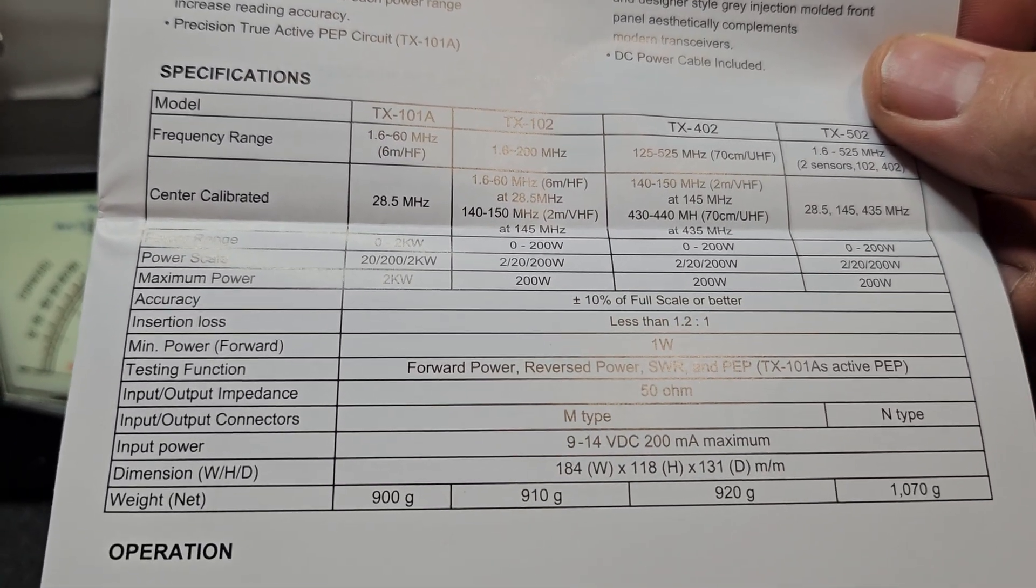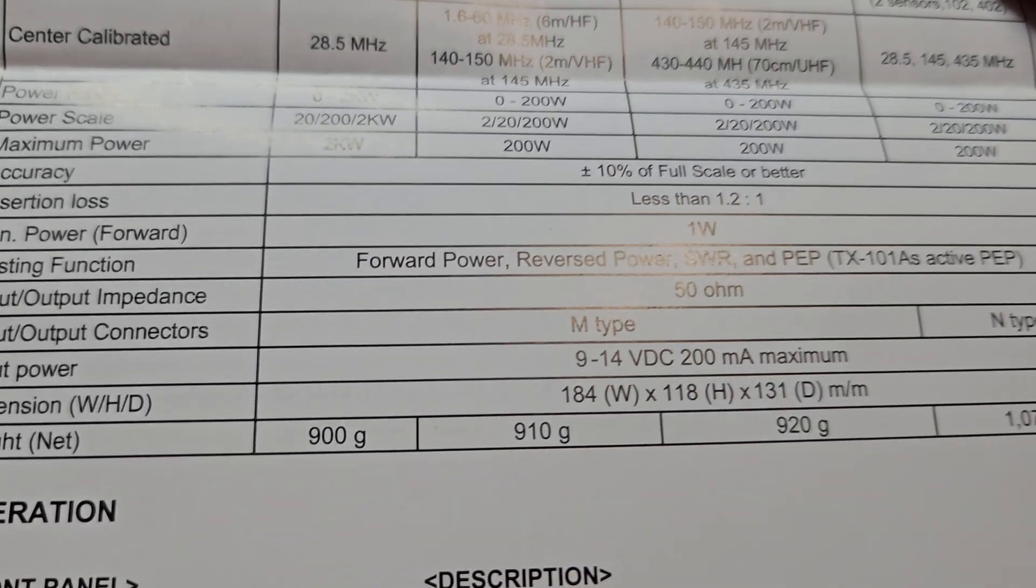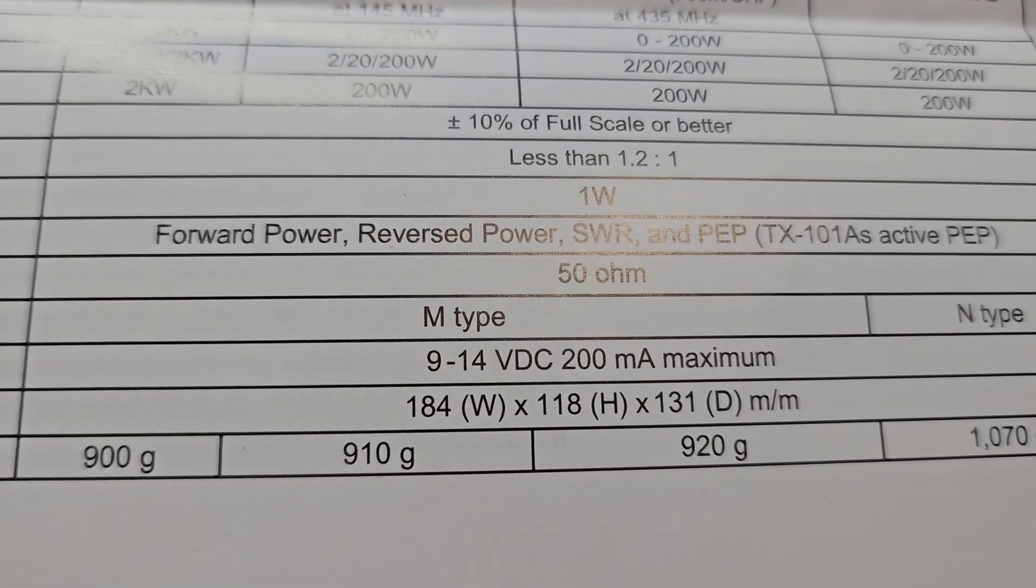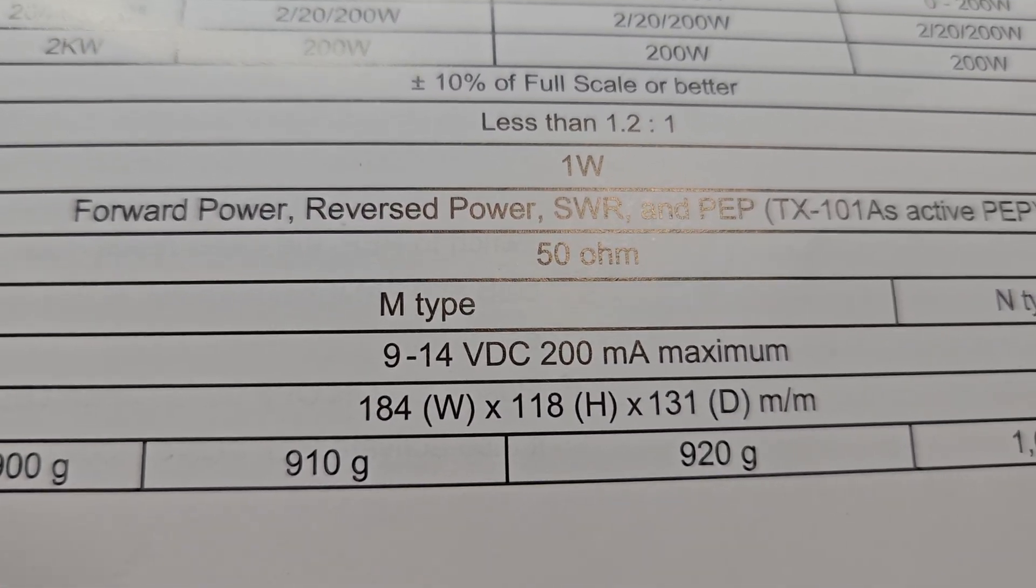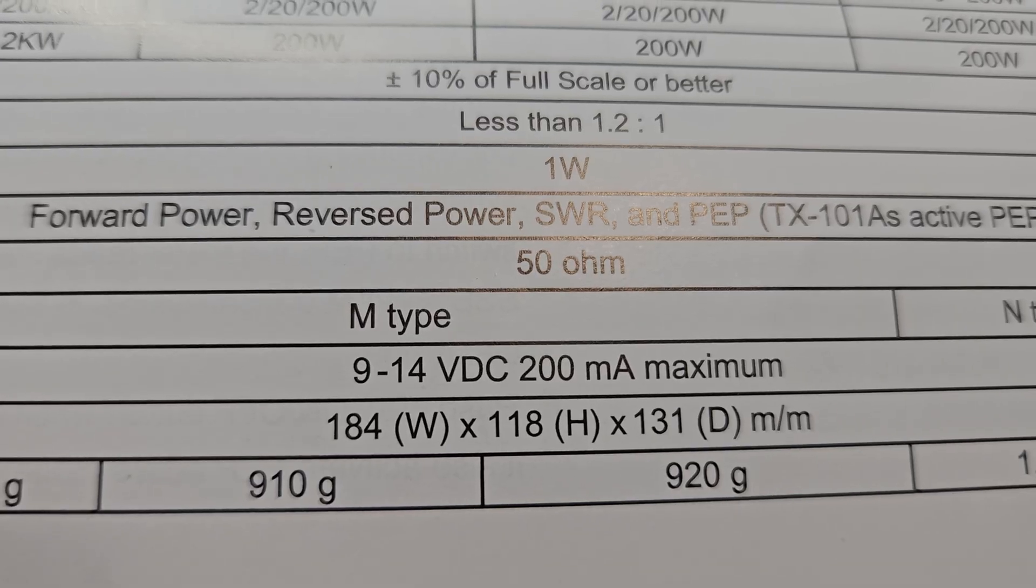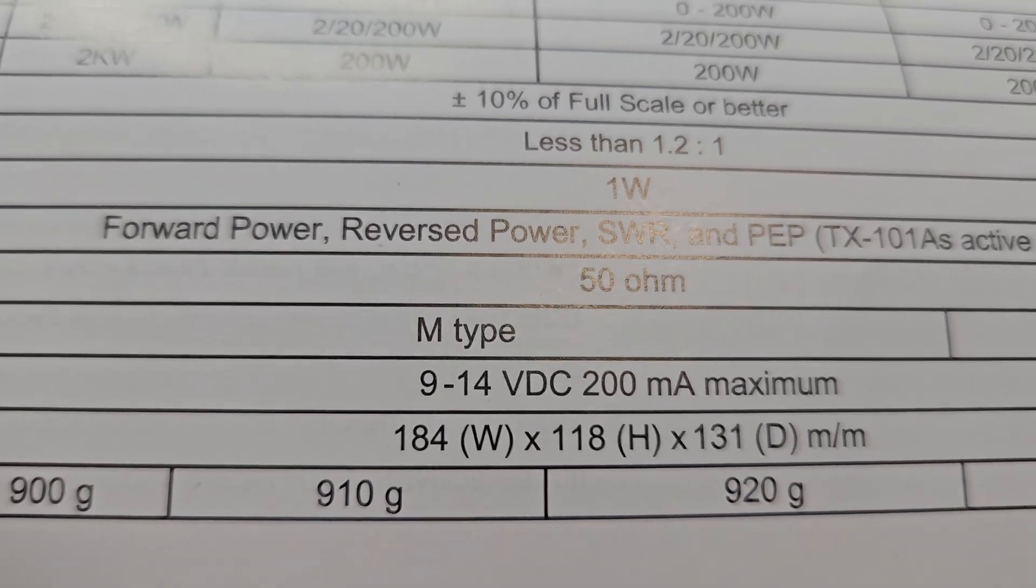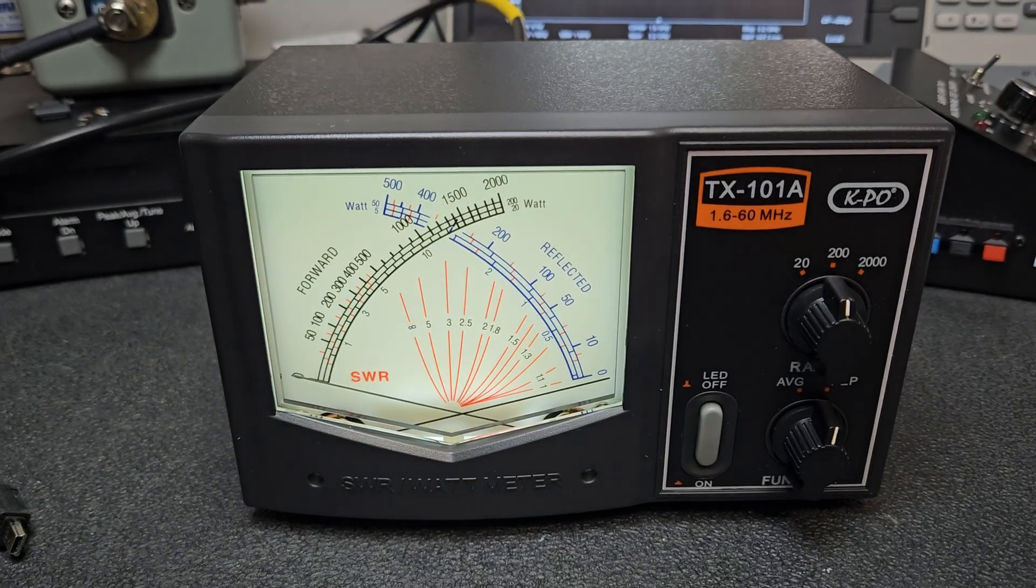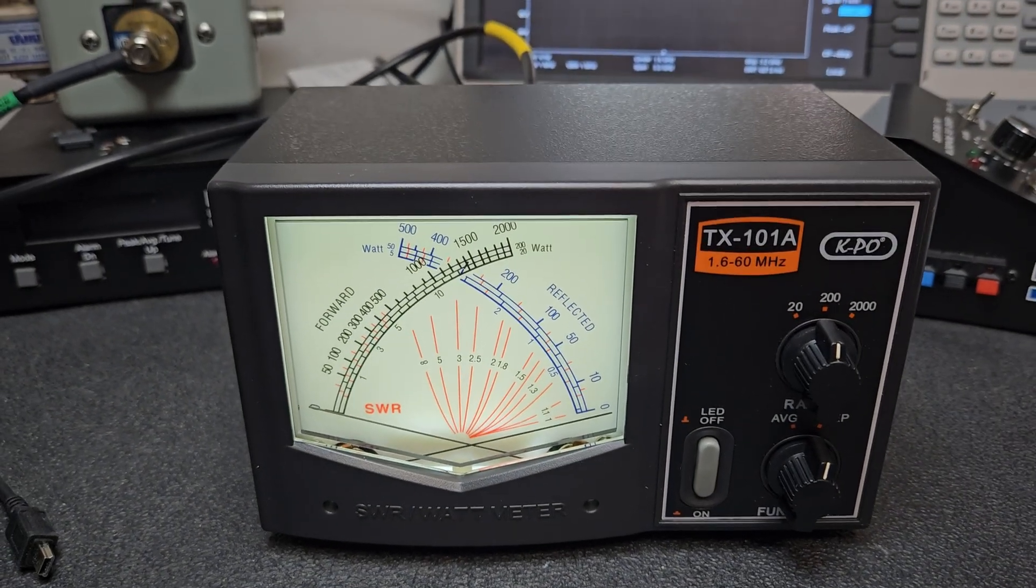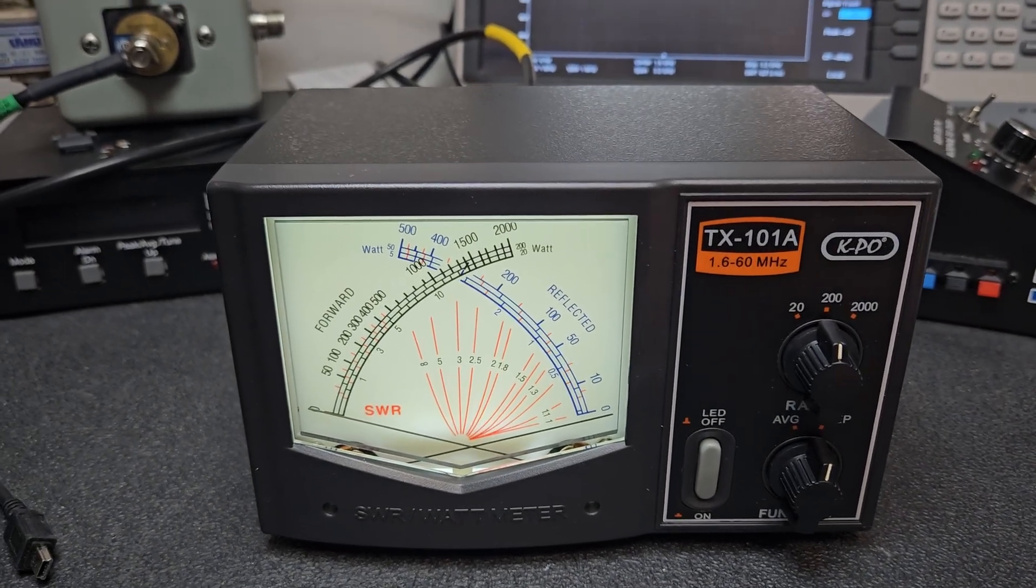I'll give you guys some quick measurements. If you're going to use your own wall wart power supply, keep the output between 9 and 14 volts DC and 200 milliamps of current. That's the maximum. You don't need any more than that. If you do, you'll probably damage the meter.